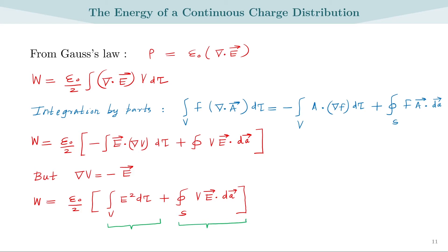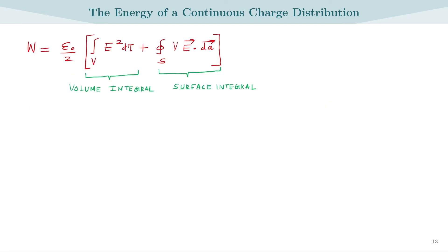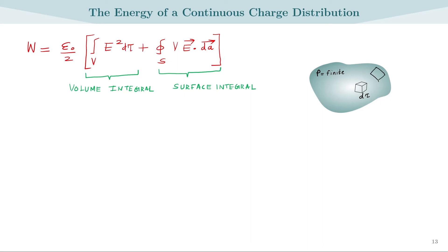The first term is a volume integral and the second is a surface integral. What we have done is assembled charges brought from infinity to form a volume charge distribution, as shown in the figure. Rho is finite inside the volume, and the volume integral calculates the integral of E-squared over small volume elements d-tau. The surface integral calculates the integral of V times E over a patch of area dA on the surface of the volume charge.